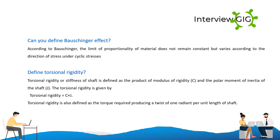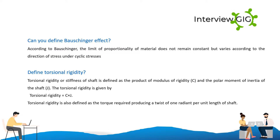Define torsional rigidity. Torsional rigidity or stiffness of a shaft is defined as the product of modulus of rigidity (C) and the polar moment of inertia of the shaft (J): torsional rigidity = C × J. It is also defined as the torque required to produce a twist of 1 radian per unit length of shaft.